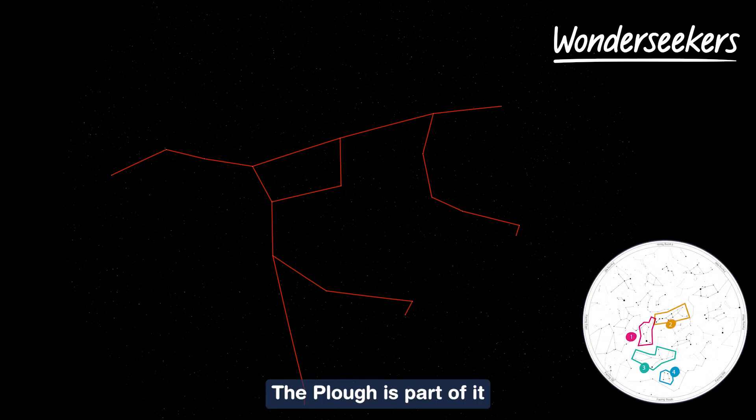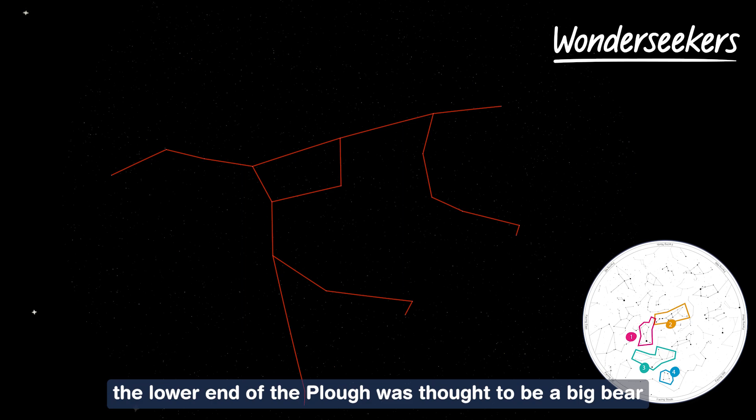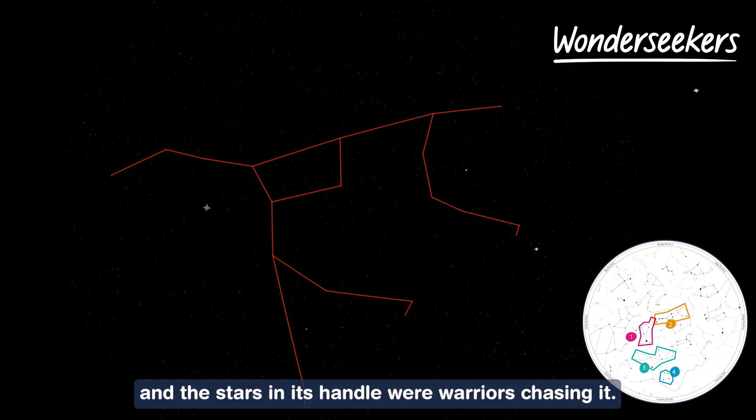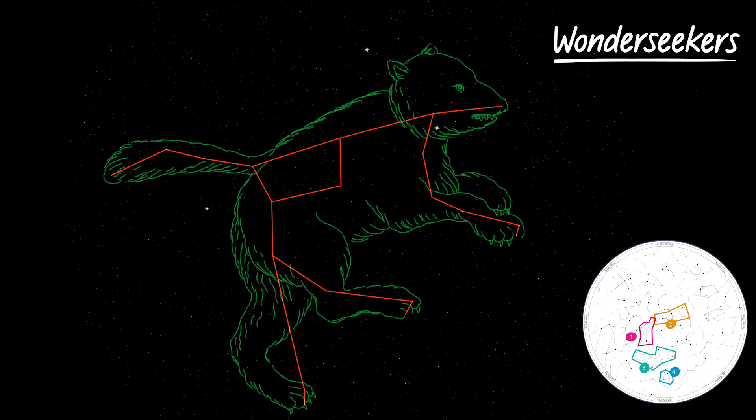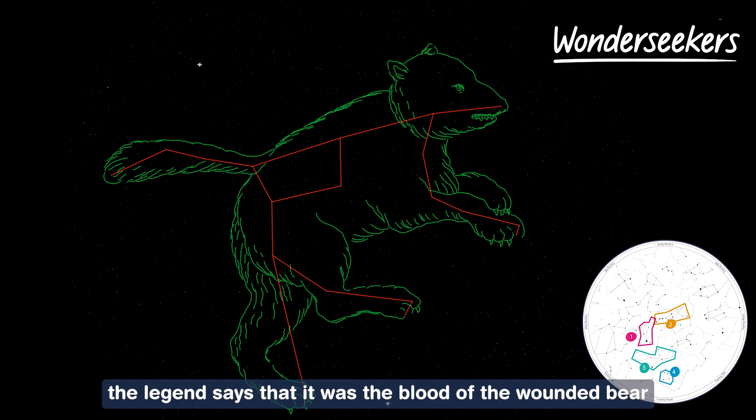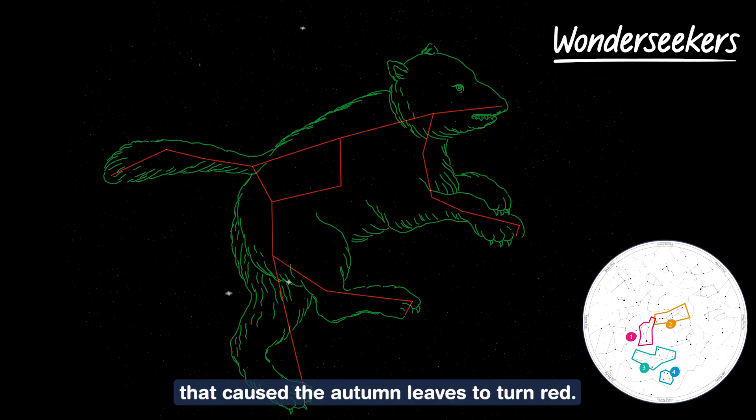The plough is part of it and in some Native American legends the lower end of the plough was thought to be a big bear and the stars in its handle were warriors chasing it. Since the constellation is in the sky in autumn the legend says that it was the blood of the wounded bear that caused the autumn leaves to turn red.